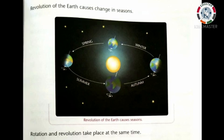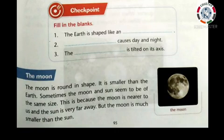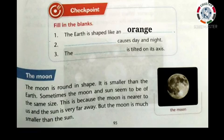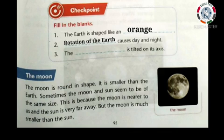Rotation and revolution take place at the same time. Now see the checkpoint box — fill in the blanks. First: the Earth is shaped like a dash — the answer is orange. Two: dash causes day and night — the answer is rotation of the Earth. Three: the dash is tilted on its axis — the answer is Earth.